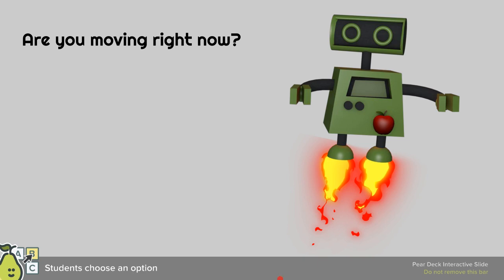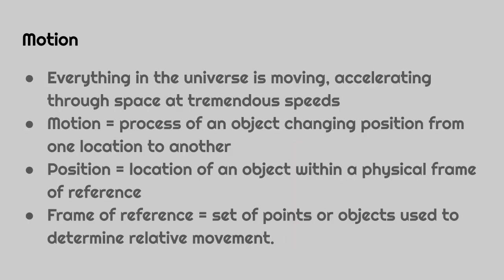I'm sitting down so I'm not moving right now. As a review, everything in the universe is moving, accelerating through space at tremendous speeds. Motion equals the process of an object changing position from one location to another. Position equals the location of the object within a physical frame of reference. Frame of reference is a set of points or objects used to determine relative motion, like a coordinate plane.